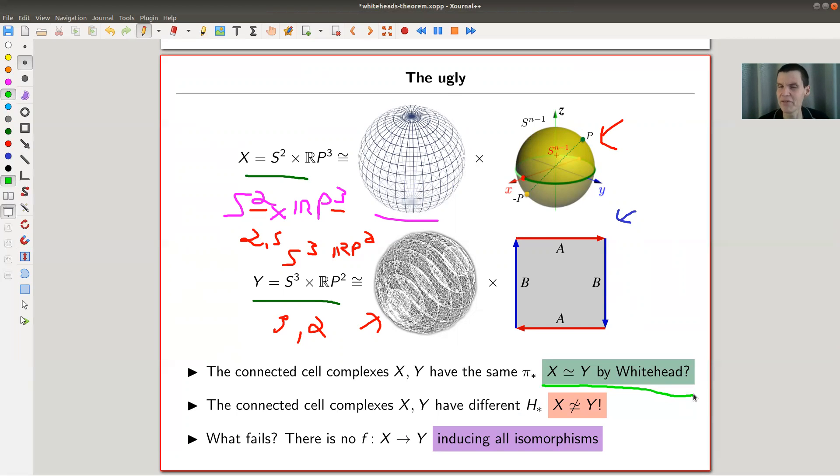But kind of, they have the same homotopy groups, so kind of Whitehead's theorem wants to tell you that they are homotopy equivalent. It doesn't, because you're missing the map between them that would induce the isomorphisms. So what will happen here is you have plenty of π's, whatever π₁, π₂, π₃, and so on, for X and Y. For Y is the same, π₁, π₂, π₃, and it might happen that you're just isomorphic, but kind of not in connected ways.